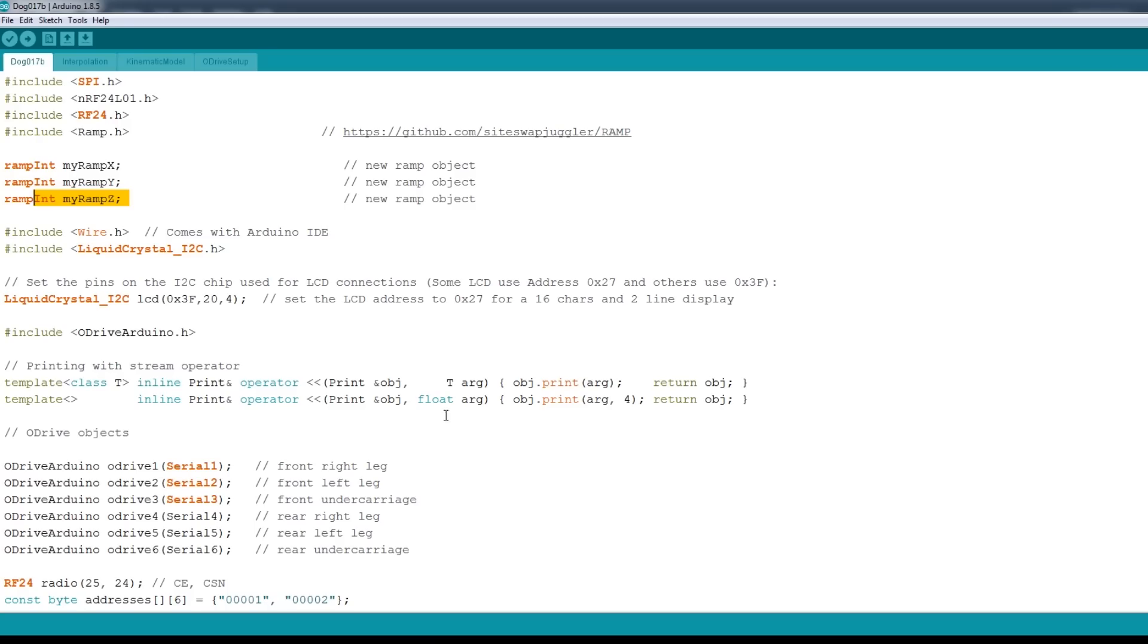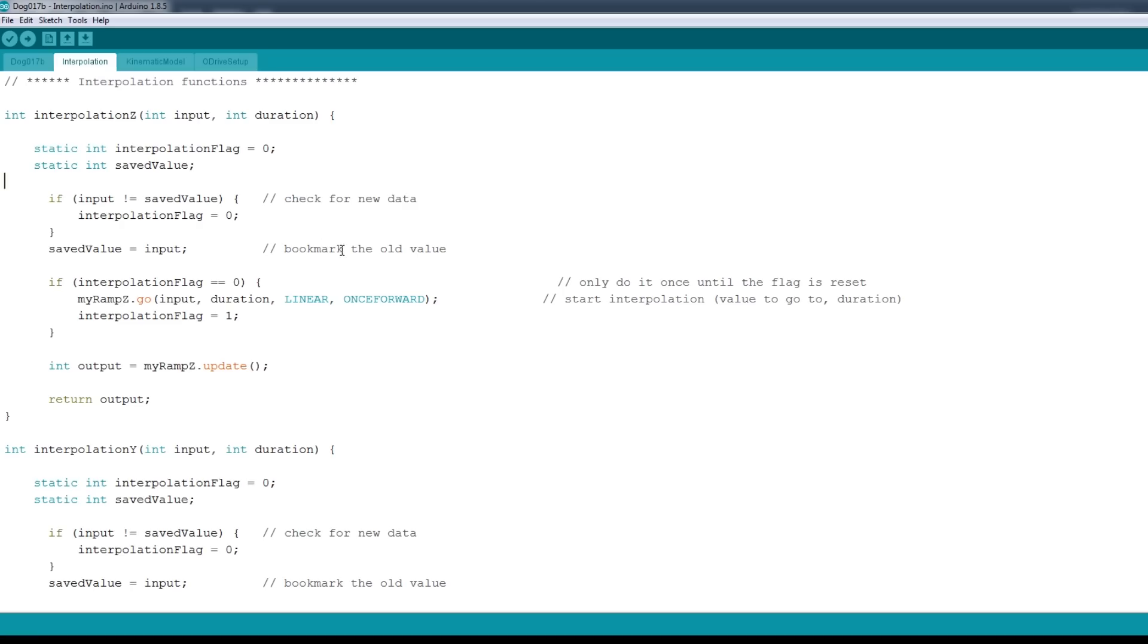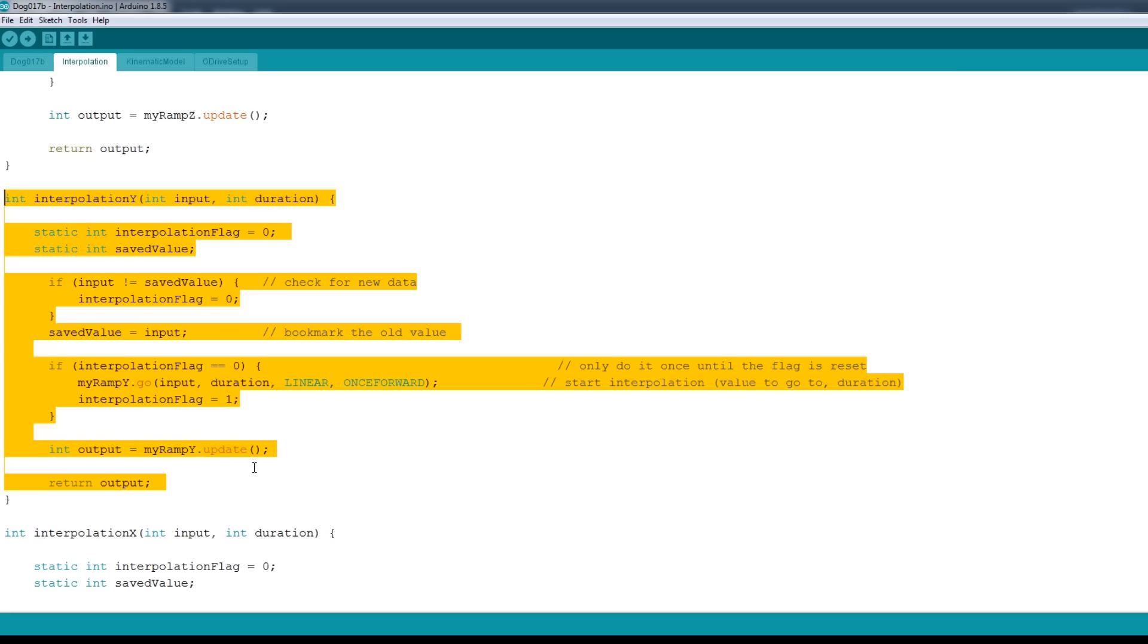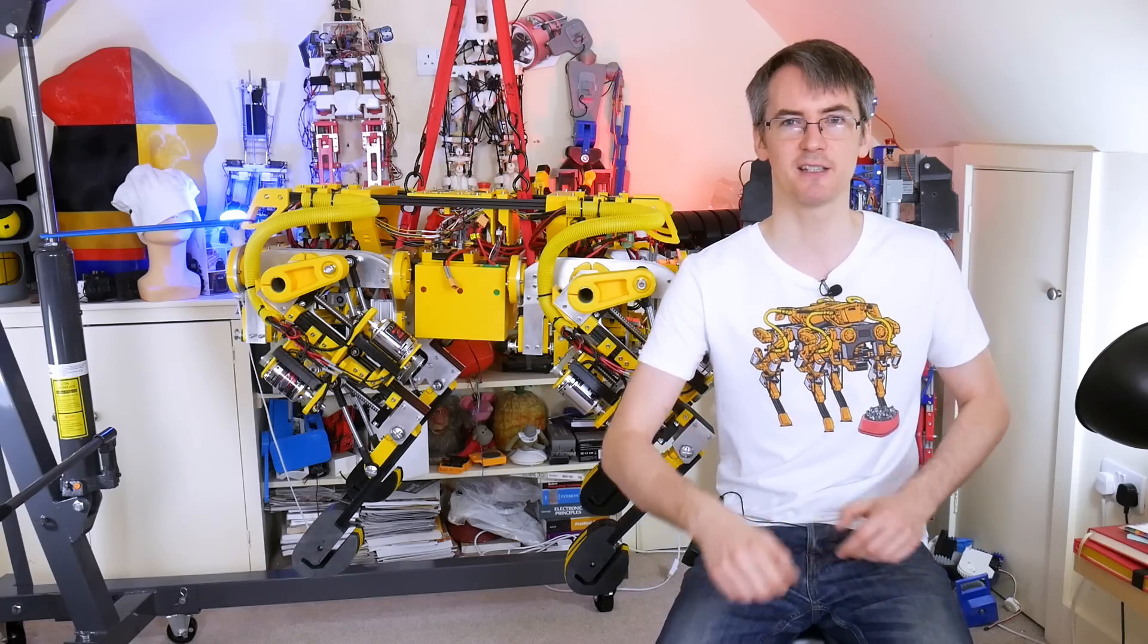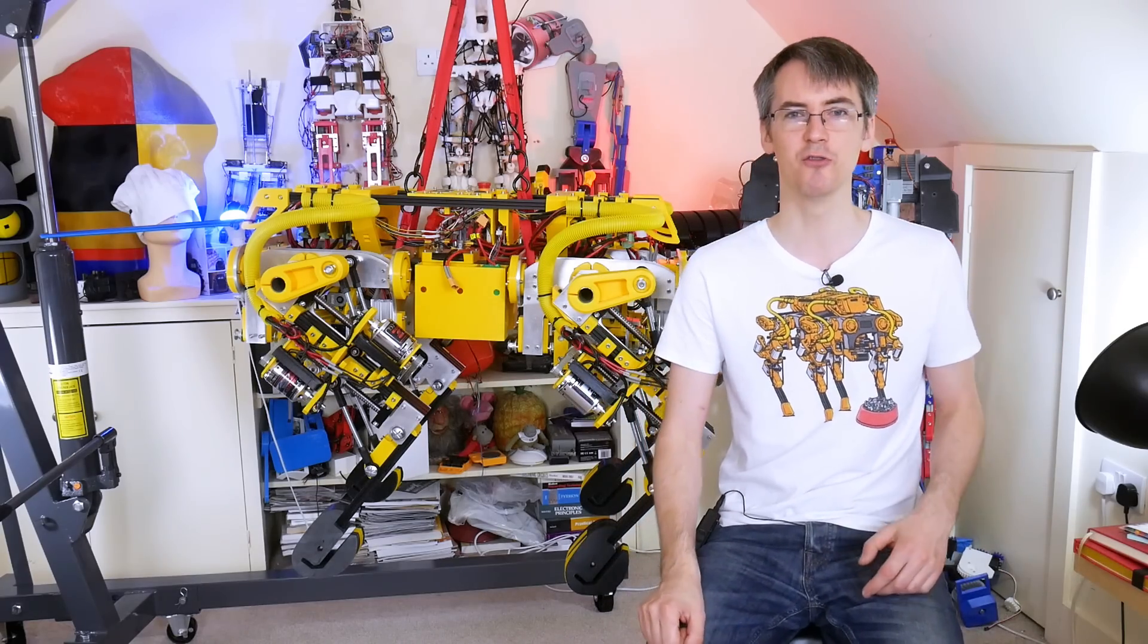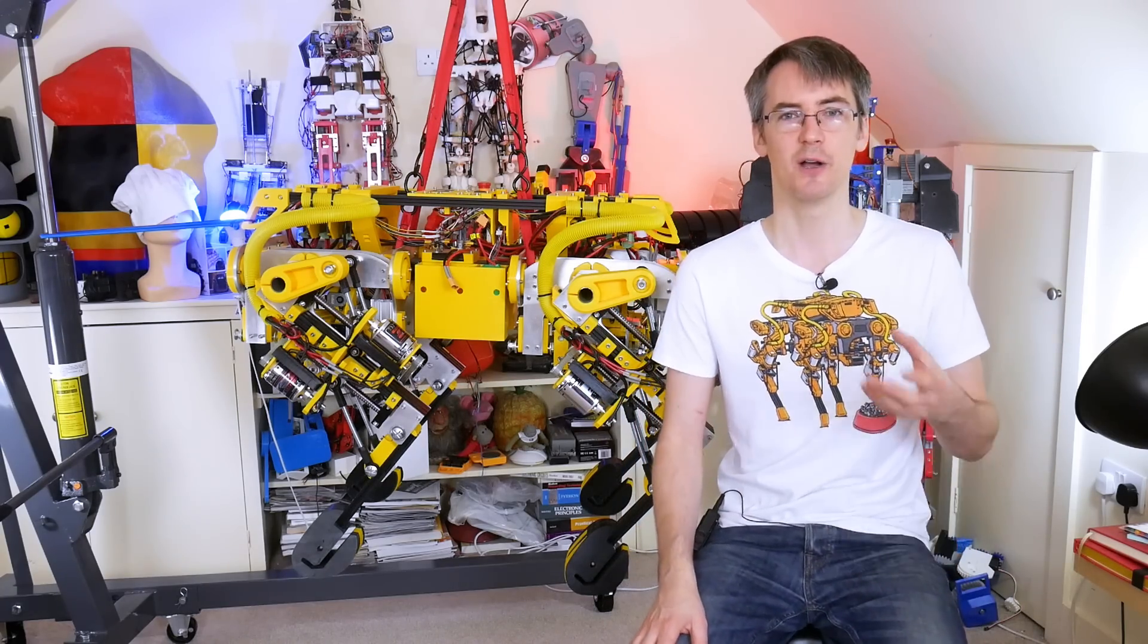And in order to do the interpolation we're using an Arduino library called ramp and that will allow us to ramp from one value to another in a variety of ways essentially. And I'm using linear and obviously doing it once you can ping pong backwards and forwards between the values. But I found I had some issues when I declared these as a function with crosstalk in between the function basically because there's various variables which get confused and it looked like they were resetting each other and that's why the legs broke. So I ended up with these three functions one for X, one for Y, one for Z and then calling those in the kinematic model and that seems to work.